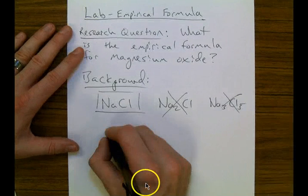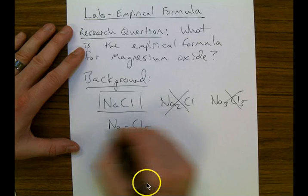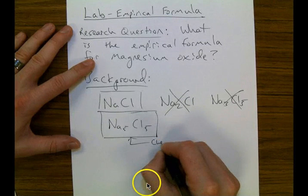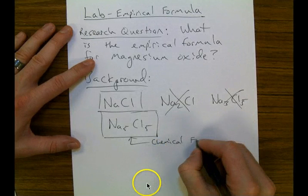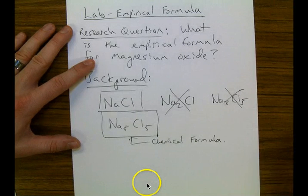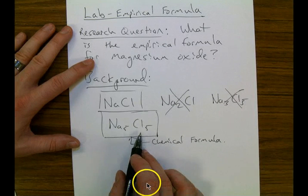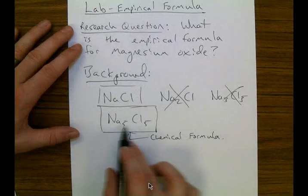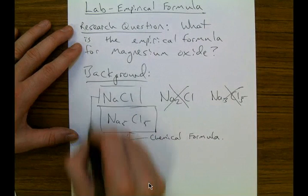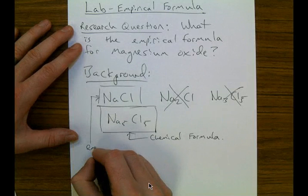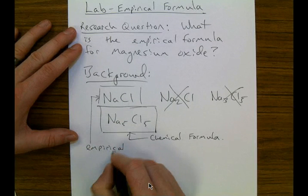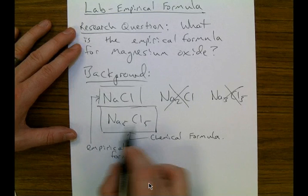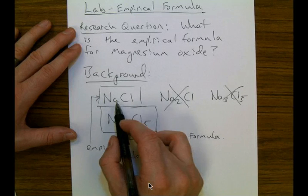I could also write it out as Na5Cl5 — that would also be correct. This is what we call a chemical formula, sometimes referred to as a molecular formula. It just shows the correct ratio between the atoms that are bonding together. Since it's an ionic compound, which is a bond between ions, it's 5 to 5. But we have a name for the simpler one: it's called the empirical formula, because it's the lowest ratio. So 5 to 5 is correct, but 1 to 1 is the lowest ratio.